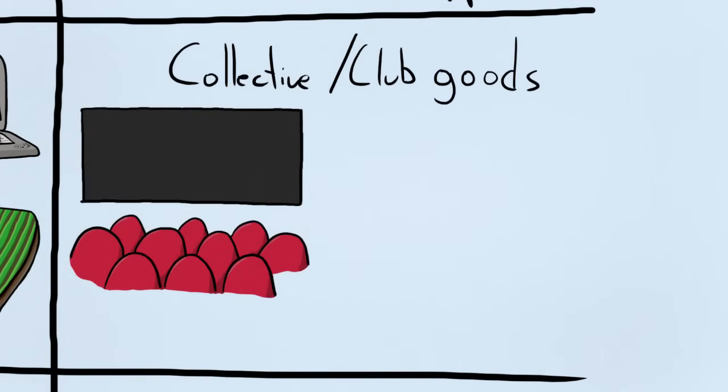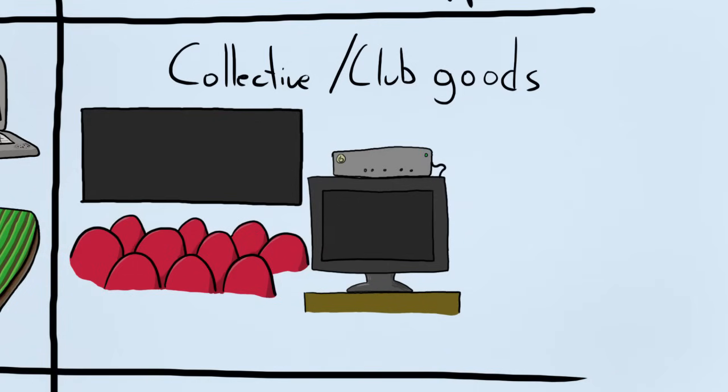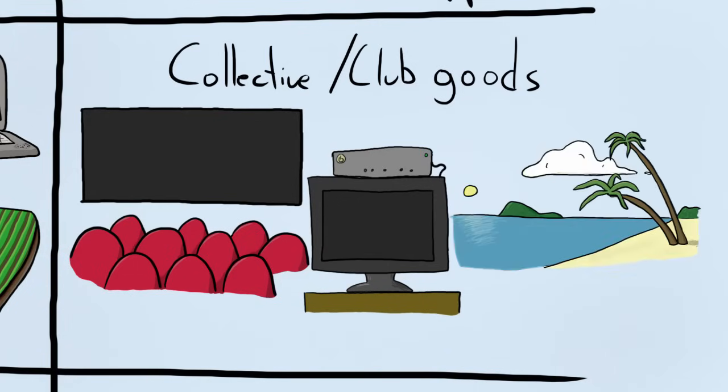Something that is non-rivalrous but excludable, that is you have to pay for it or do something to help upkeep it, but all the people that have paid into it don't subtract from other people's ability to use it, we call collective or club goods. So that's like going to see a movie at a cinema, paying for TV channels with non-broadcast TV, or going to certain eco-tourism spots.